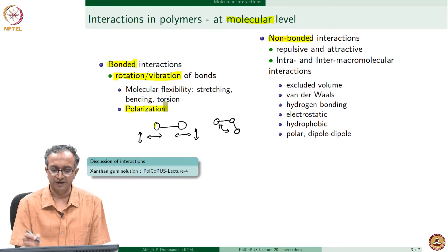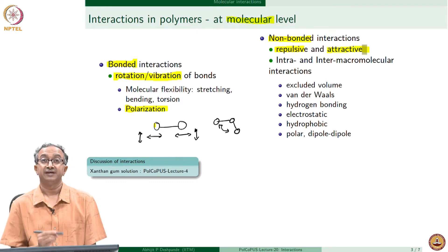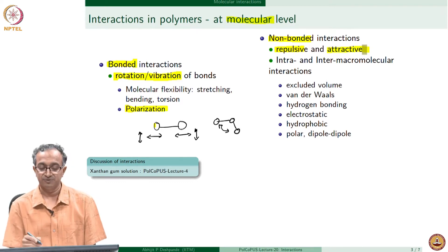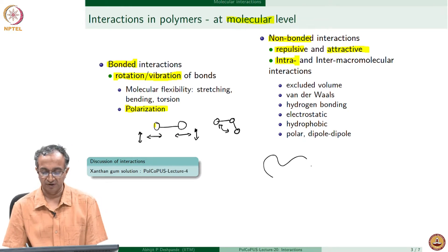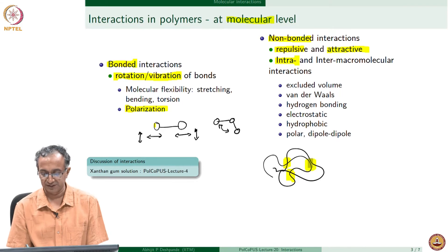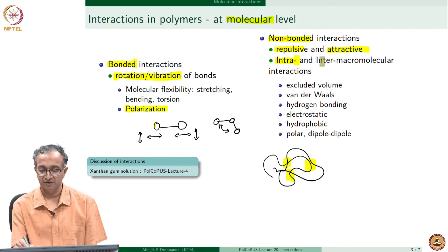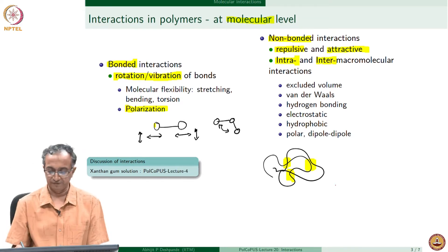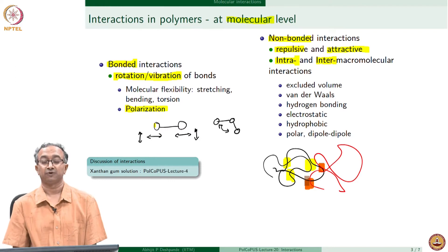When we look at non-bonded interactions, they could be both repulsive and attractive. In the case of macromolecules, what is very crucial is that we have interactions within a macromolecule itself. Because a macromolecule is such a long, giant object, there are different parts of the same macromolecule which interact with each other. So you could have intramolecular interactions, or if there is another macromolecule present, then of course you can have interactions between different macromolecules as well.